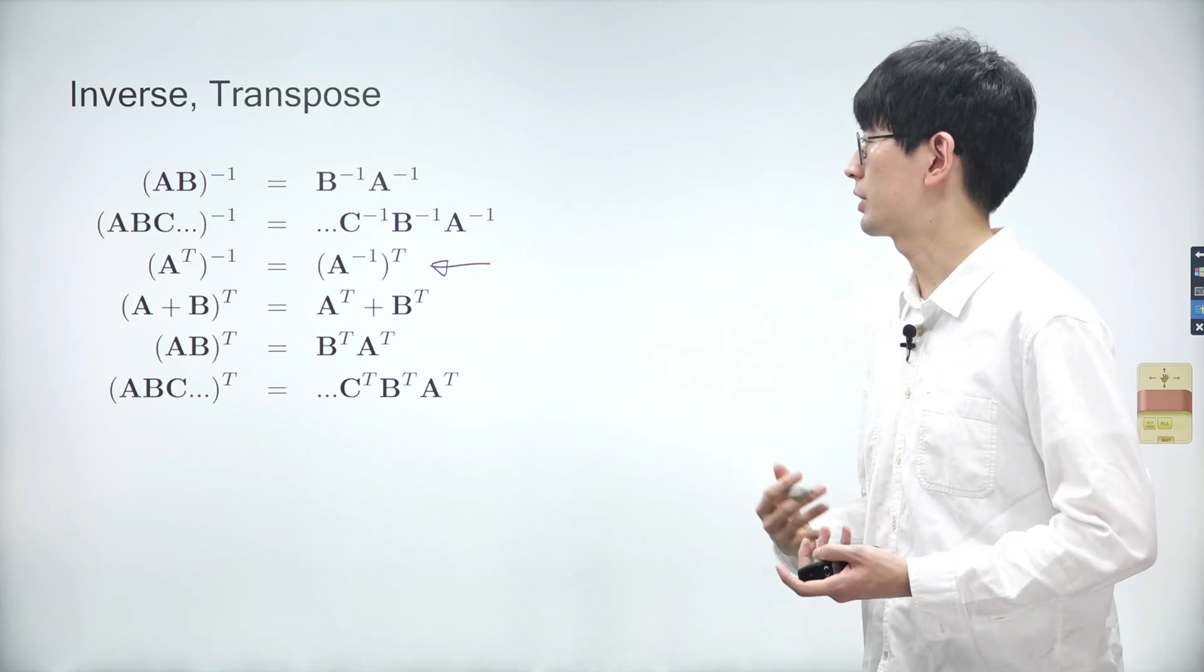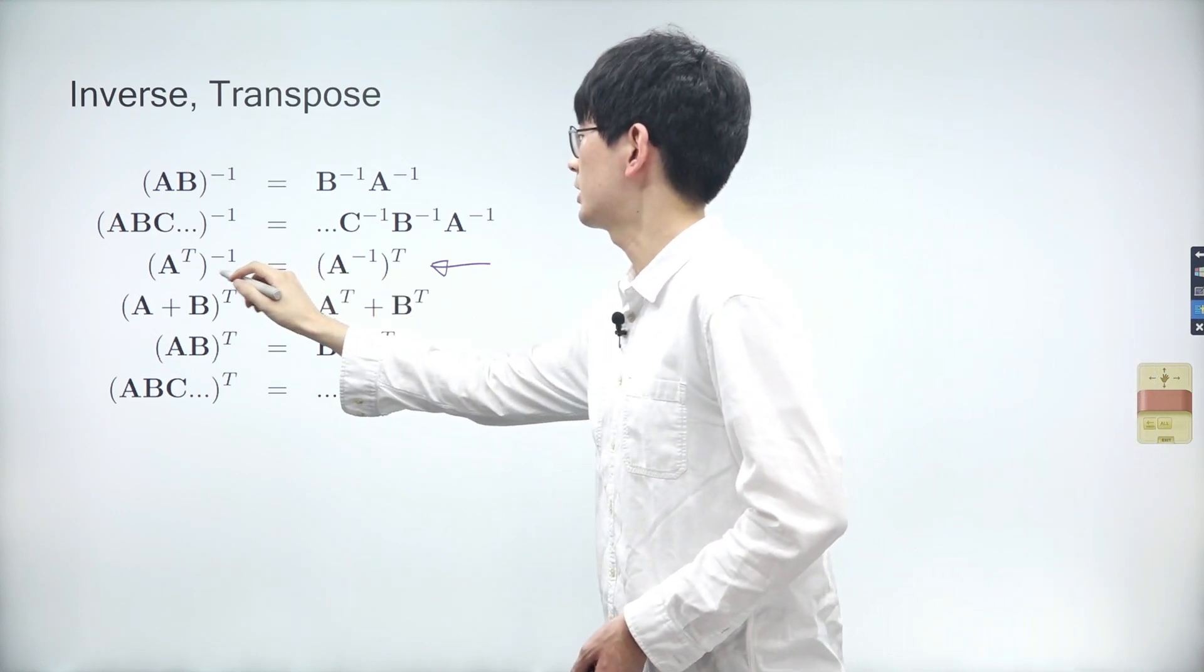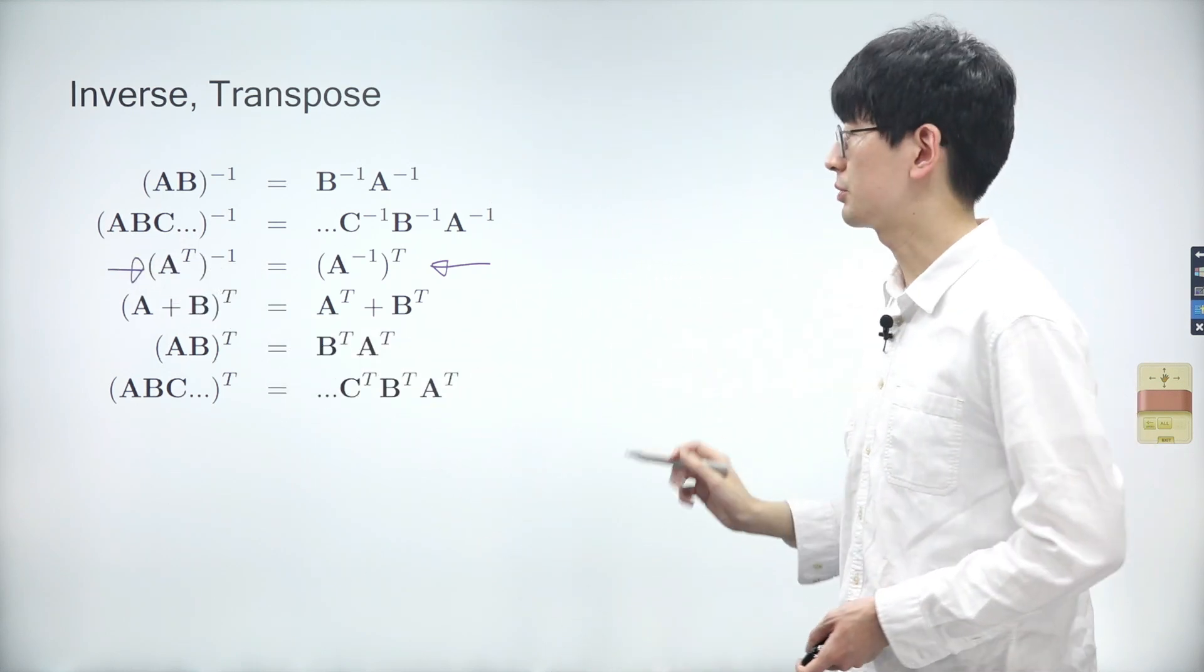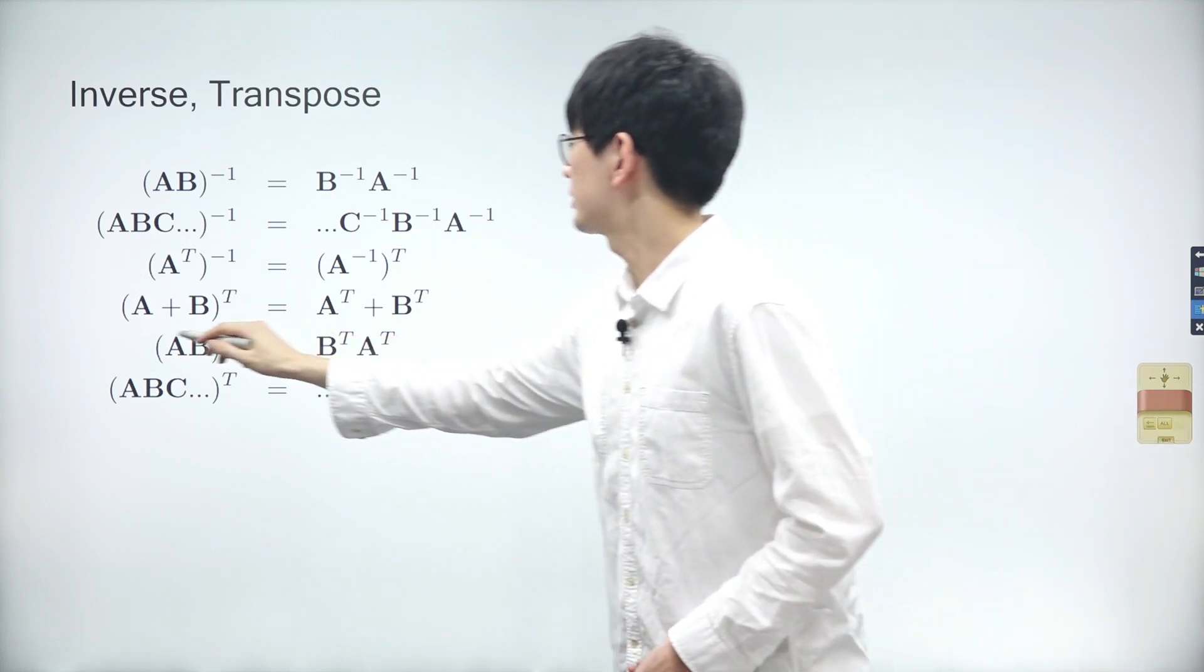The next property is that the inverse of the transpose is the same as the transpose of the inverse. The transpose itself is also a type of transformation. Since this property is not intuitive, let's just memorize it for now.